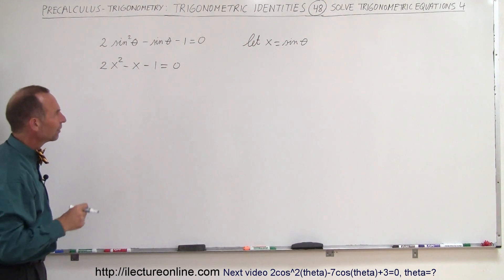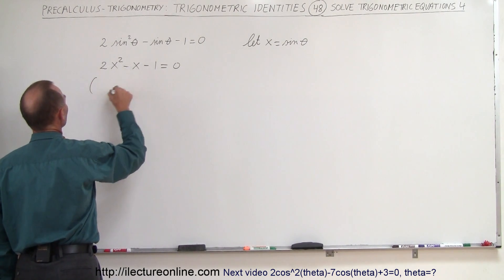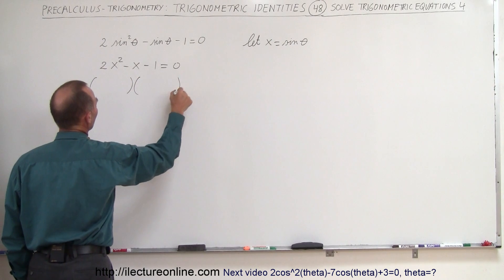And now we're going to solve that equation. And I'm thinking that's probably factorable. Let's see if it is or not. So if it is then we have to write it like this, the product of two binomials.